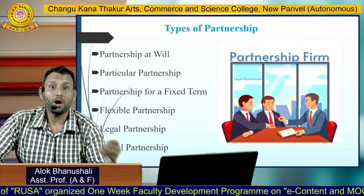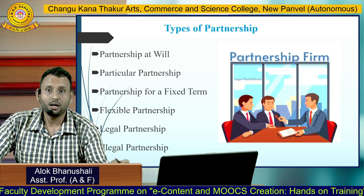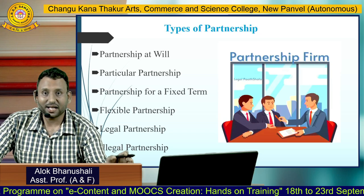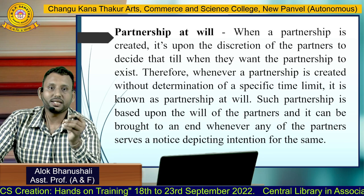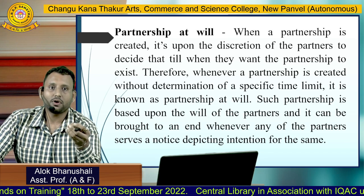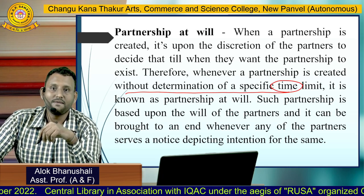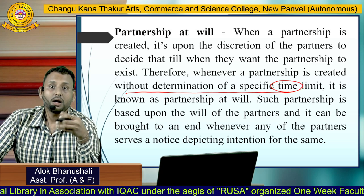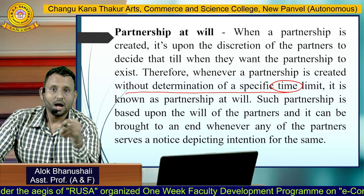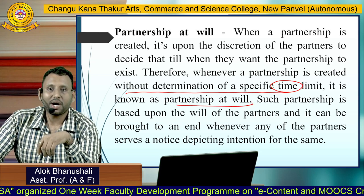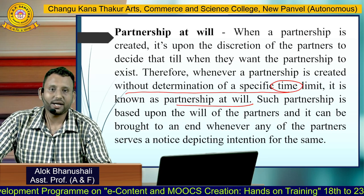There are different types of partnership. Partnership at will is created upon the discretion of the partners to decide how long they want the partnership to exist. When a partnership is created without a determination of a specific time limit, it is known as partnership at will. Such a partnership is based upon the will of the partners and can be brought to an end whenever any partner serves a notice depicting their intention to do so.